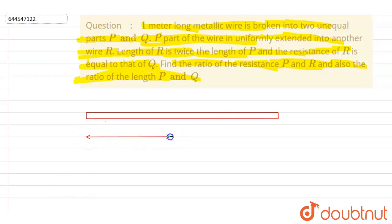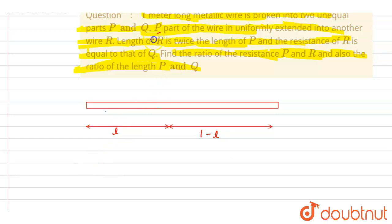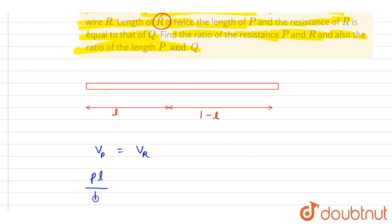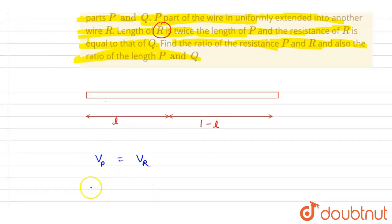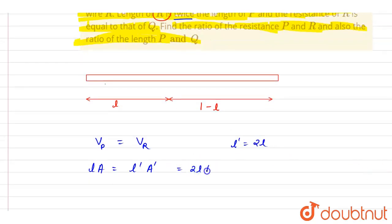If the length of P is l, then the length of Q is 1 minus l. Since P is extended into R and the volume is conserved, the volume of P equals the volume of R. Writing this out: A × l = A' × l', where l' is twice l, so A × l = A' × 2l. Cancelling l from both sides gives A' equals A by 2.